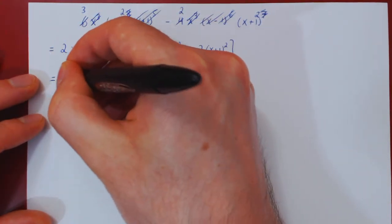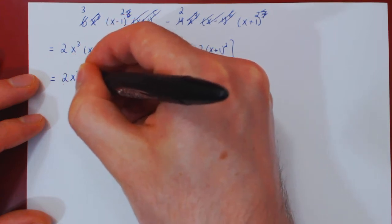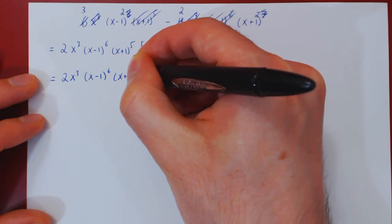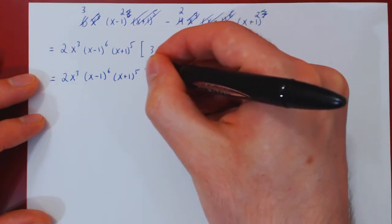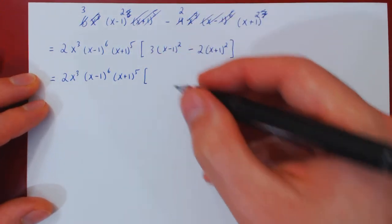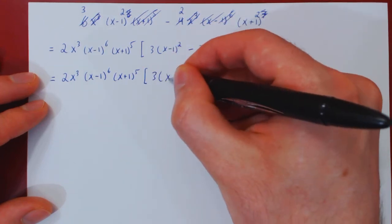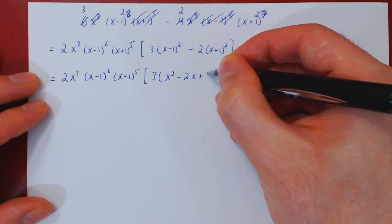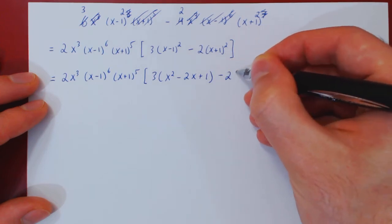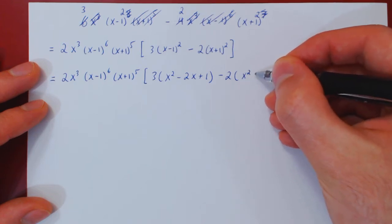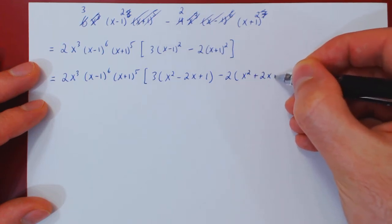So we have 2x cubed, x minus 1 to the 6, x plus 1 to the 5, times 3. Now if you square x minus 1, you get x squared minus 2x plus 1, minus 2 times, and if you square x plus 1, you get x squared plus 2x plus 1.